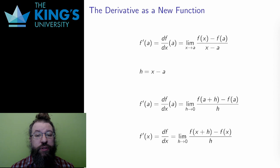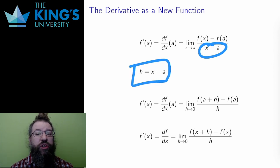There are a couple subtle variants of this limit. Instead of letting x get closer and closer to a, I could measure the distance between the two inputs. Let me call this h. As x gets closer to a, h gets closer to zero.